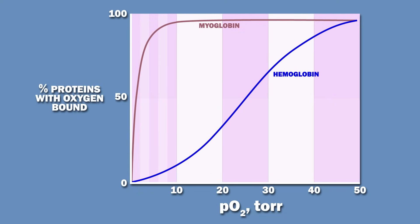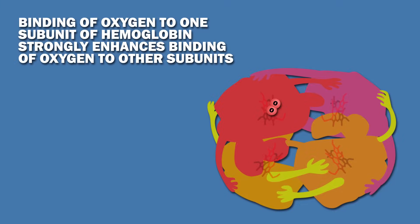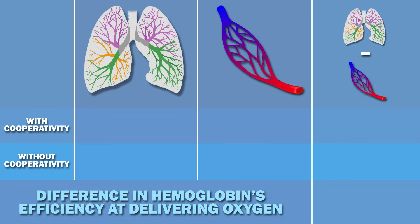While myoglobin's oxygen-binding interaction displays classical Michaelis-Menten-type saturation behavior, hemoglobin's interaction results in a sigmoid-shaped curve rather than a hyperbolic one. The sigmoid shape allows us to draw some conclusions. Binding of oxygen to one subunit of hemoglobin strongly enhances binding of oxygen to other subunits — a phenomenon called cooperativity. Hemoglobin binds oxygen in the lungs, where the partial pressure of oxygen is around 100 torr; here, 98% of hemoglobin has oxygen bound to it.